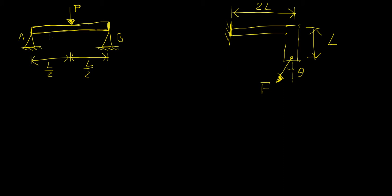In the first example we have a beam — you can imagine this is a very basic bridge. You have two supports on both sides, a beam of constant length and constant thickness, and then there is a force P located right in the middle of this structure. We need to find the reaction forces at the supports that will put this system in equilibrium, because without them this thing would just move down.